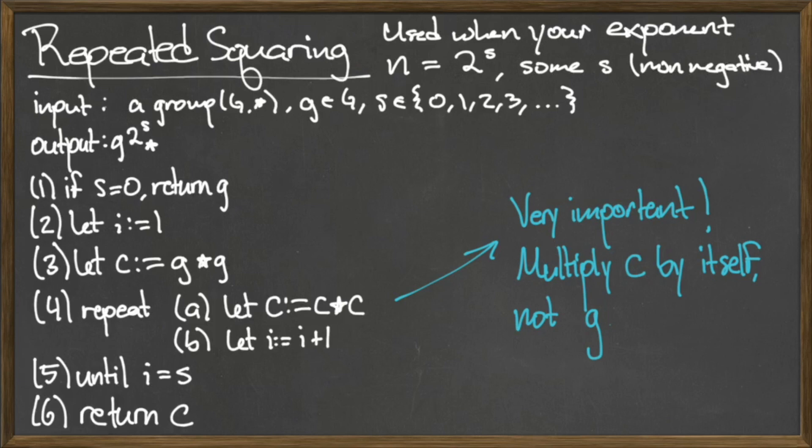Steps 2 and 3, which only execute if step 1 is skipped, are to create the variable i and assign it the value of 1, and create the variable c and assign it the value of g star g.